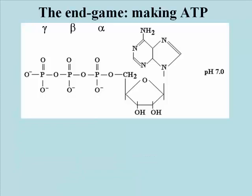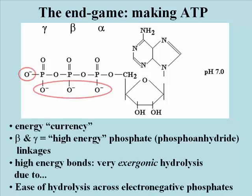The endgame of glycolysis, and in fact of respiration, is to get free energy out of glucose and into ATP. Here's a drawing of the ATP molecule as it would exist at about pH 7, where it is most of the time in cells. ATP is the energy currency of life. Its phosphoanhydride linkages release a lot of free energy when hydrolyzed, which is why we usually call ATP a high-energy phosphate compound and call the phosphoanhydride linkages high-energy bonds.